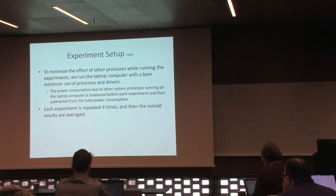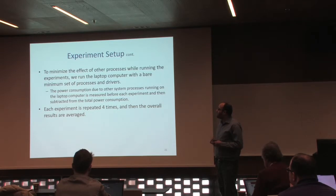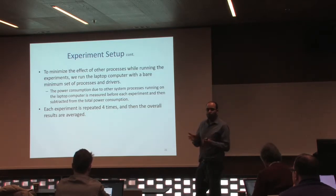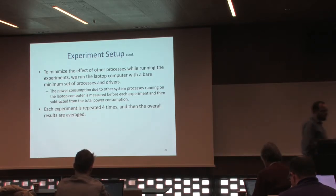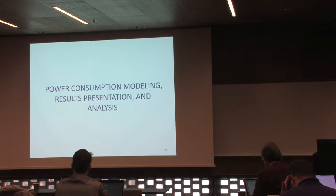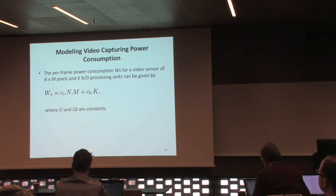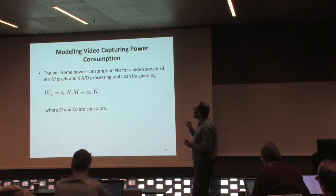The laptop encodes the video and transfers it to a client. The rendered video includes scenes of five children running and playing in a zoo — lots of details and fast movements. The camera feeds this video to the laptop which encodes it using FFmpeg for MPEG-4 and MJPEG, and X264 for H.264. Streaming is conducted using VLC streaming server. To minimize the effect of other processes, we ran the computer with the bare minimum set of processes and drivers, and the power consumption for those processes was subtracted. Each experiment was repeated three to four times and results were averaged.